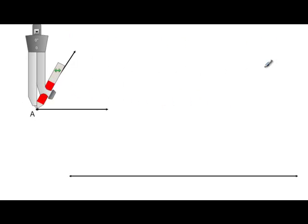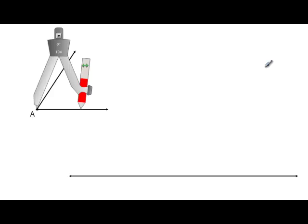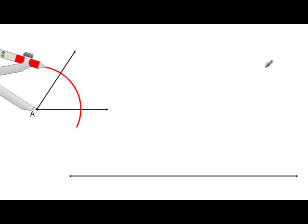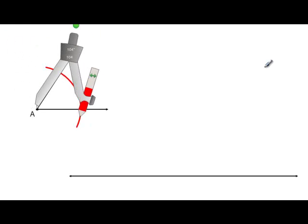I'll take my compass point and place it on point A, opening up the arms of the compass wide enough so that I can create an arc that will intersect both sides of angle A.